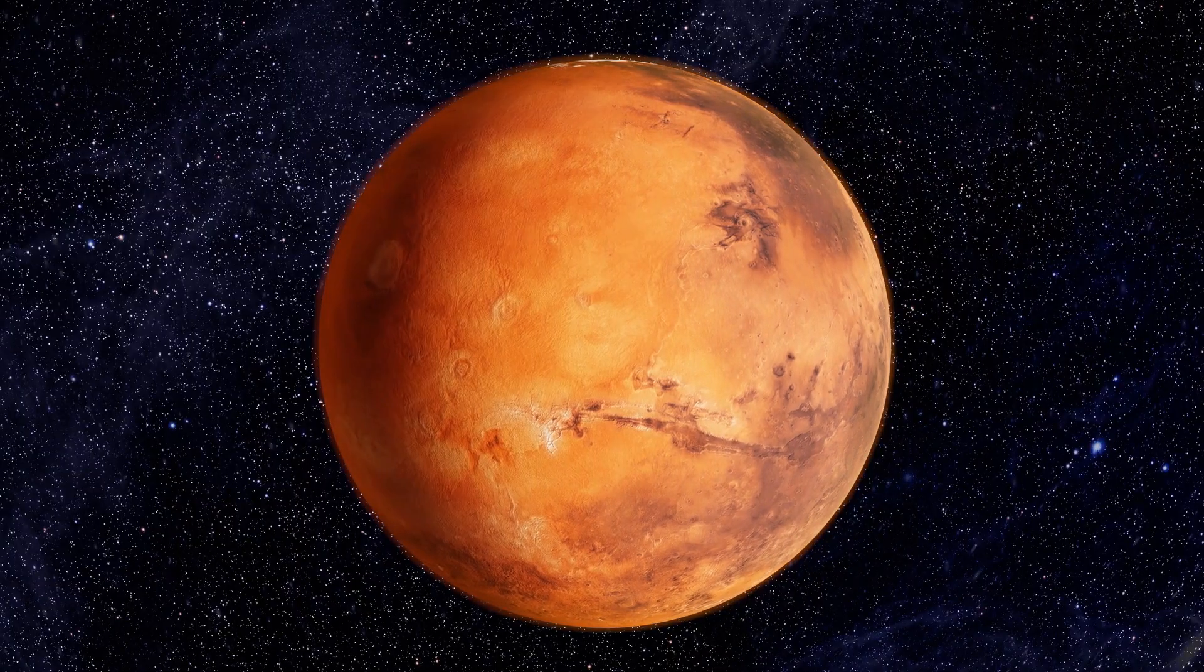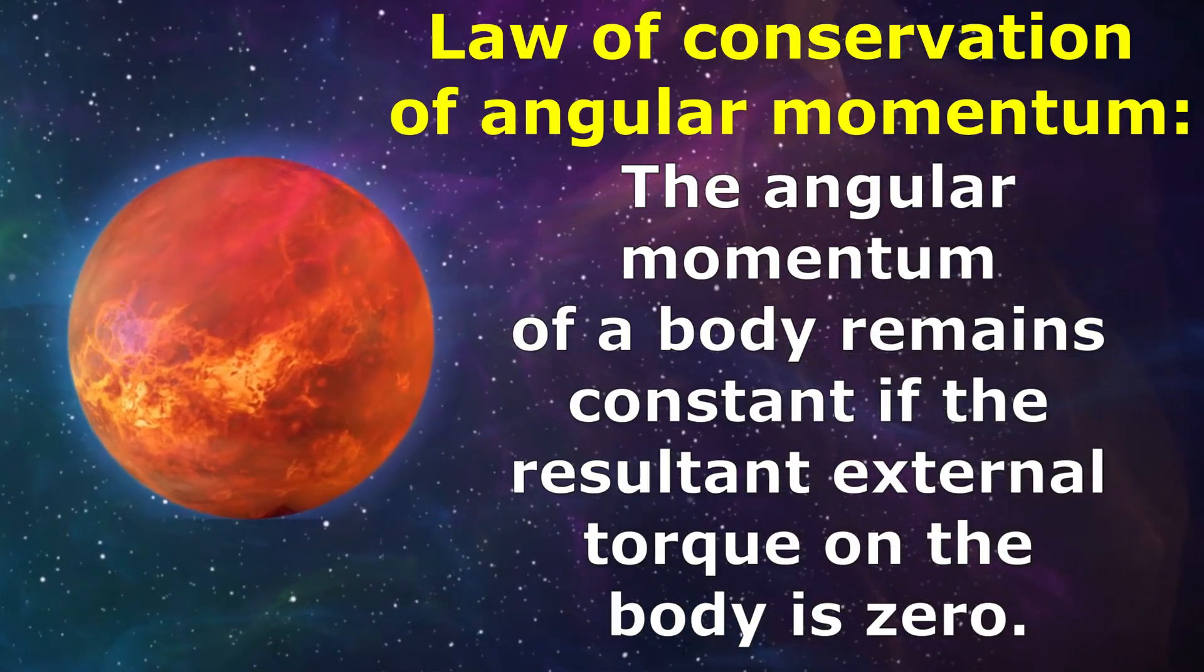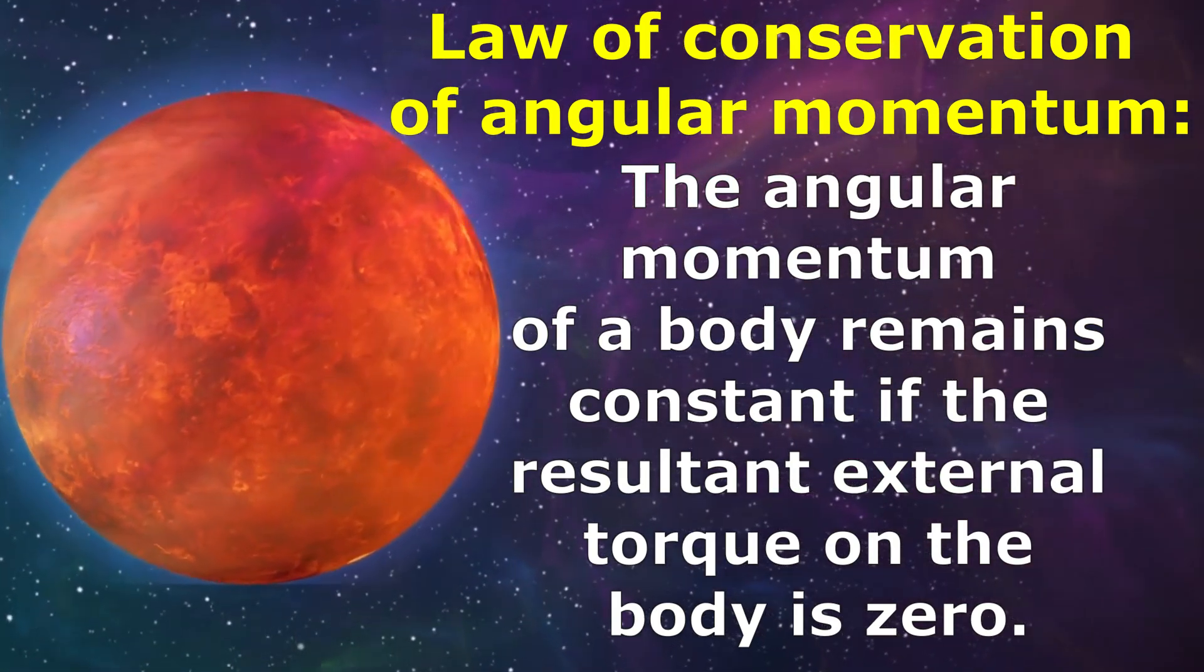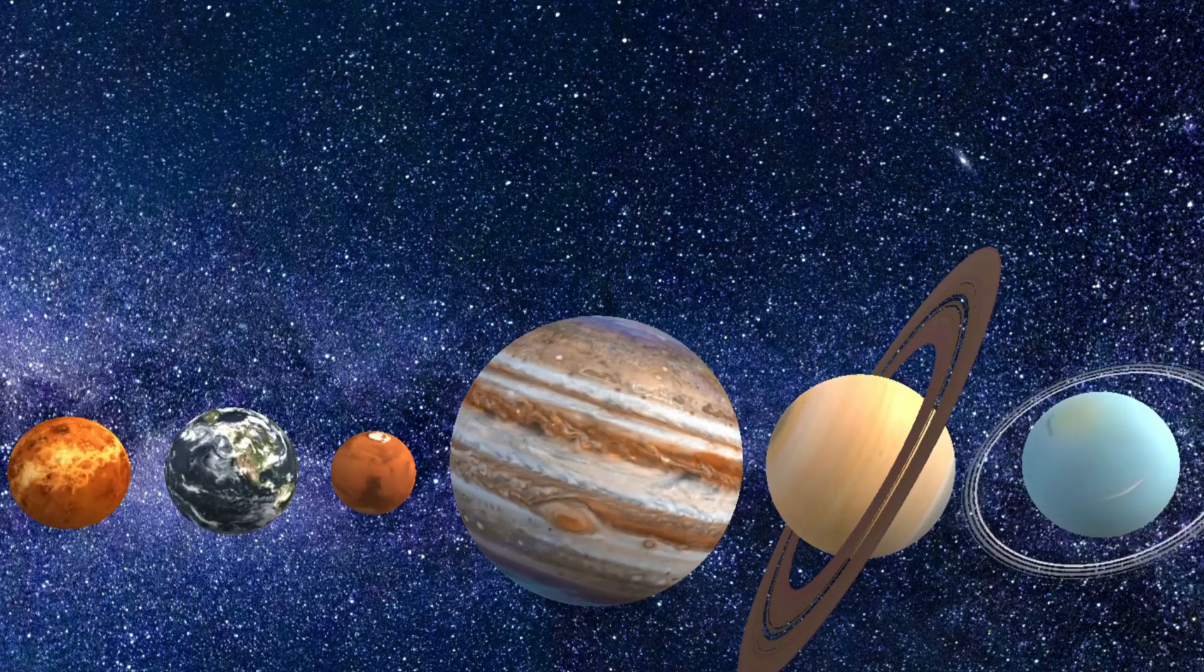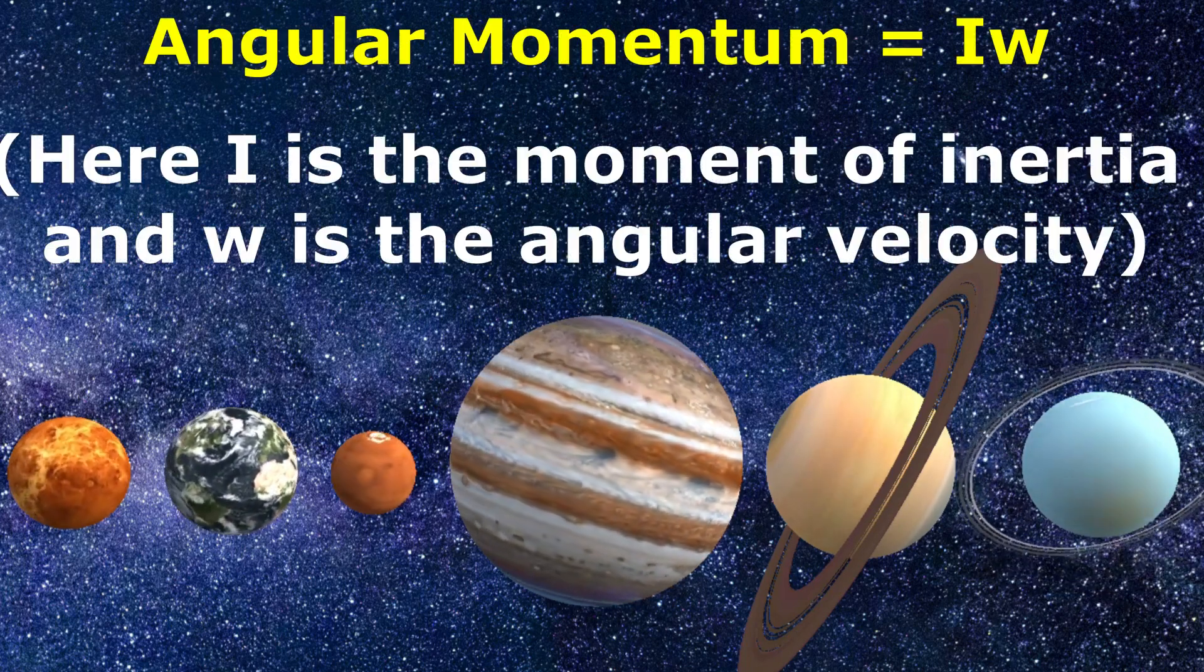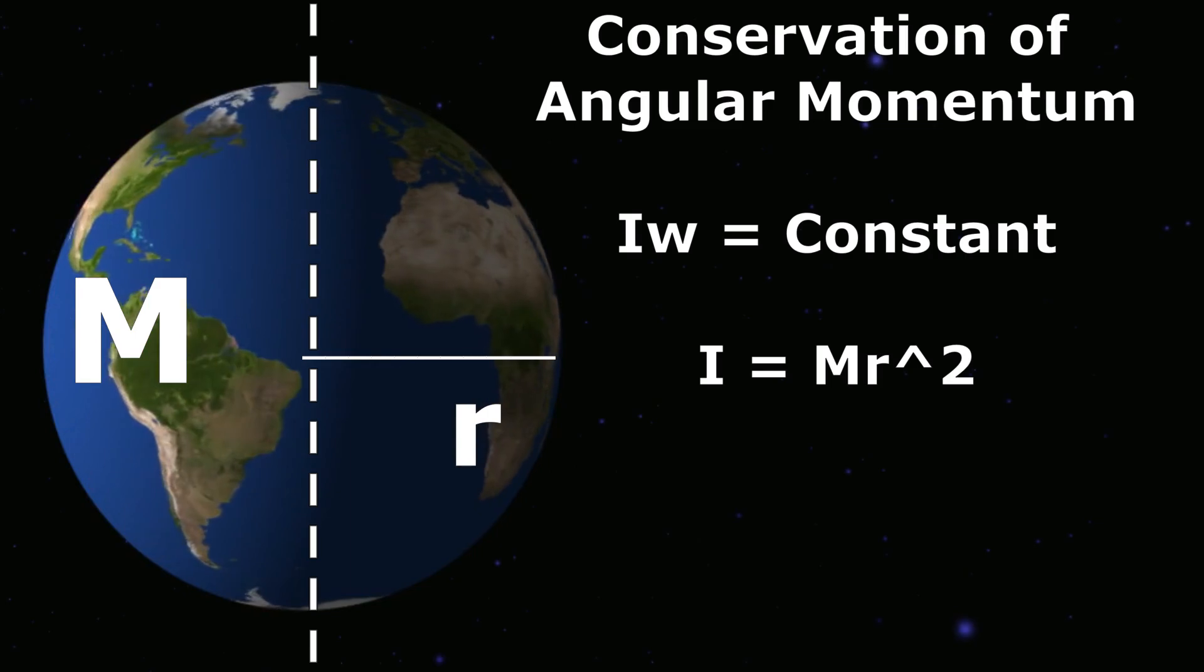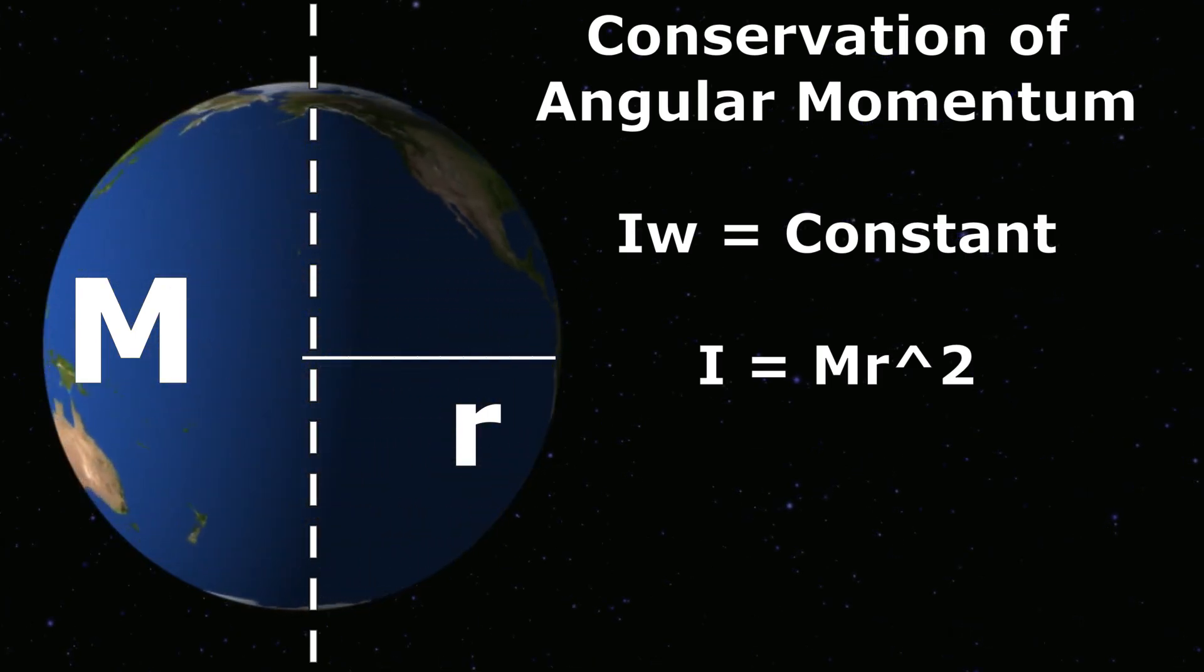The answer lies in the conservation of angular momentum. The law of conservation of angular momentum says the angular momentum of a body remains constant if the resultant external torque on the body is zero. The formula to calculate the angular momentum is I multiplied by omega. Here, I is the moment of inertia and omega is the angular velocity. So, according to the conservation of angular momentum, I omega is equals to constant.